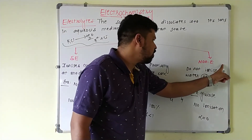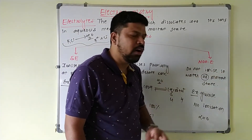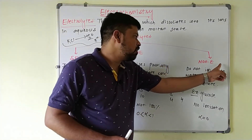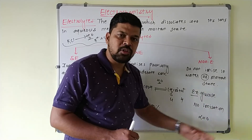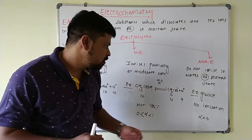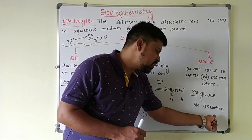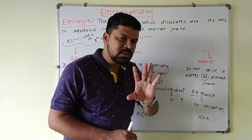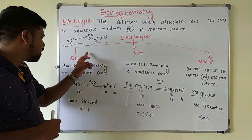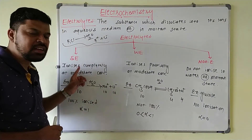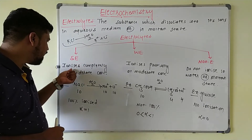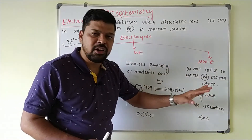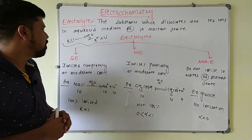Non-electrolytes do not ionize in water or in the molten state — they will not form ions at all. For example, glucose added to water forms no ions. The degree of dissociation alpha equals 0 for non-electrolytes. Summary: strong electrolytes — 100% ionization, completely ionized; weak electrolytes — partial ionization; non-electrolytes — no ionization.